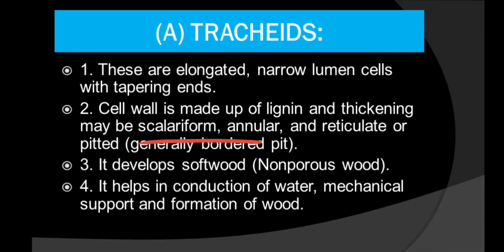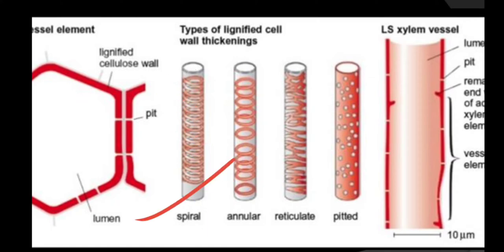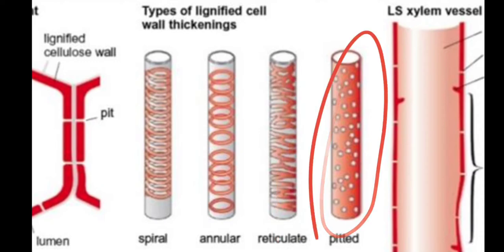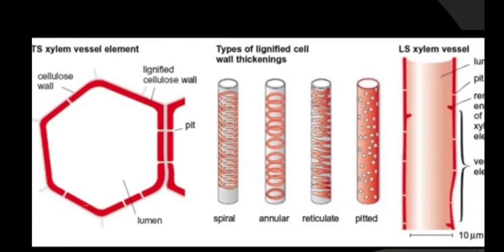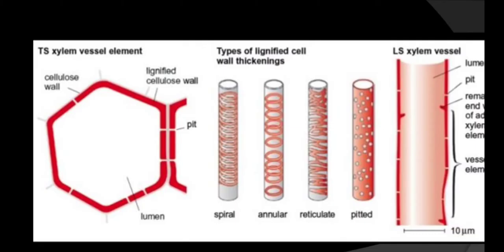If the thickening is in the form of annular, you will see ring-like structures — these are the lignin thickenings in the form of rings, known as annular thickening. Then there are spiral thickenings in the form of a ribbon. In reticulate thickening, you will see a network-like pattern. In the pitted case, somewhere the thickening is not there, so it forms a pit. Scleriform thickening looks like a ladder.